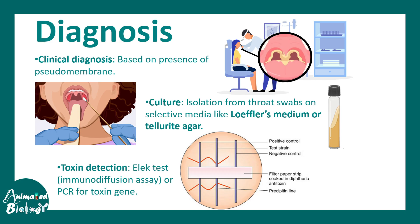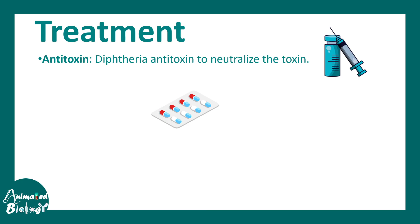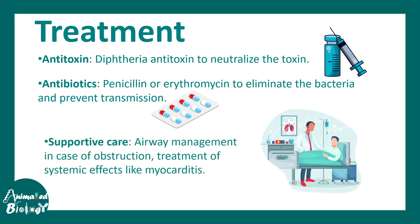For treatment, antibiotics are the go-to since this is a bacterial infection. There is also an anti-toxin that can neutralize the diphtheria toxin. Antibiotics like penicillin and erythromycin can eliminate the bacteria and prevent transmission or further aggravation of the disease. Supportive care — including airway management in case of obstruction and treatment of systemic myocarditis — would also benefit the patient.